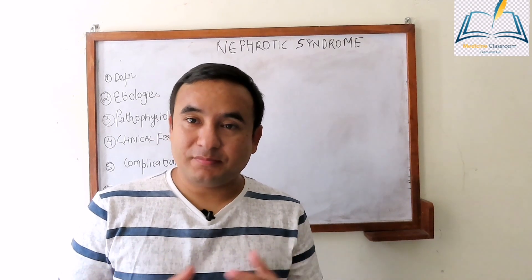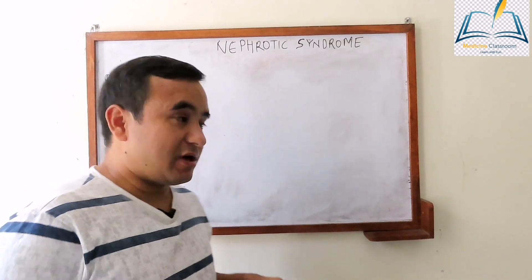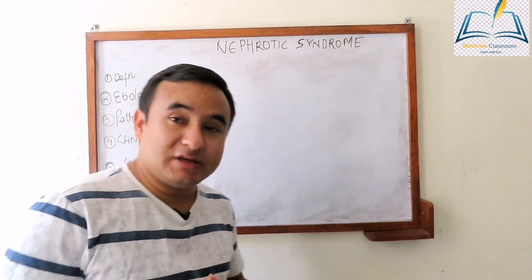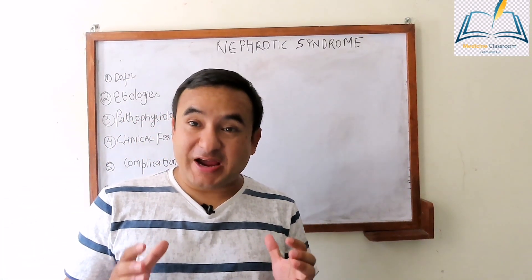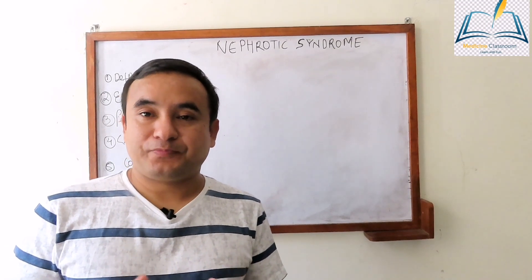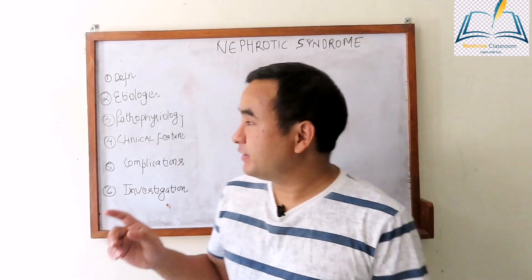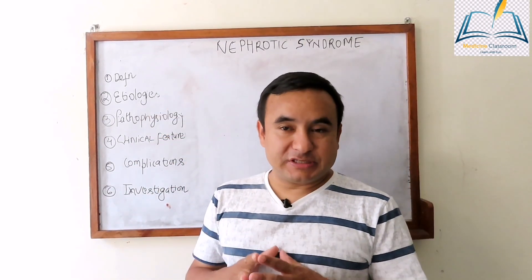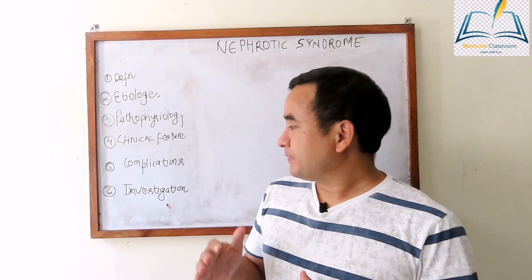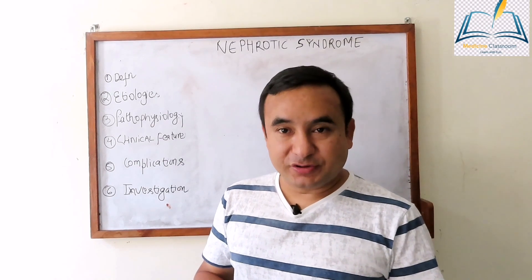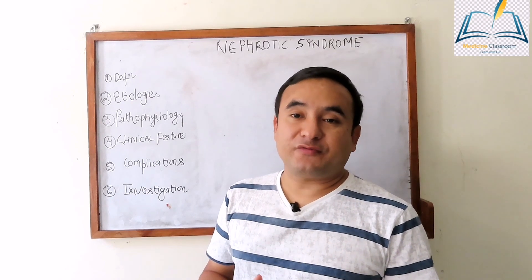Nephrotic syndrome is a glomerular disease. In today's lecture, we will discuss the defining criteria for nephrotic syndrome — how we can define it and what the criteria are. Then we will discuss the etiology, pathophysiology, and clinical features of nephrotic syndrome. We will also discuss the complications and investigation of nephrotic syndrome.